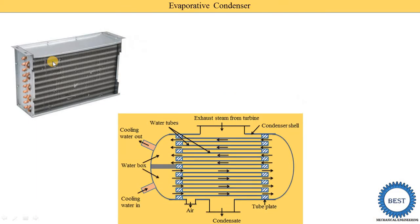The second type is the water condenser. In the water condenser, the steam or refrigerant is condensed using water. There are again two types: jet type condenser and surface condenser. In a jet type condenser, the exhaust steam and cooling water are mixed — this is used in power plants. In a surface condenser, the steam and cooling water are not mixed. In refrigeration, we cannot use the jet type condenser; we use the surface type condenser.